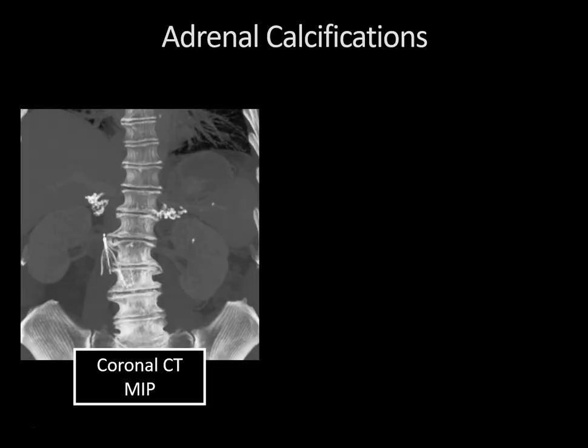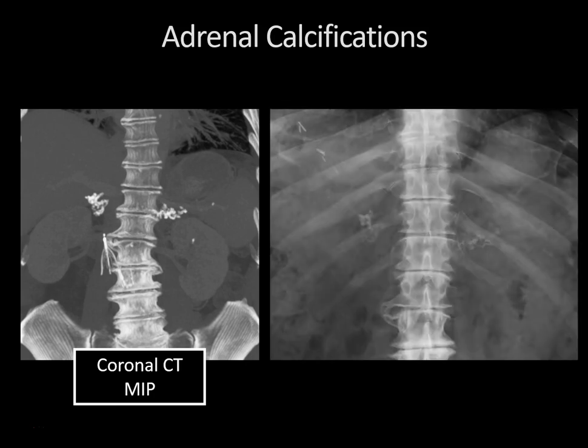The coronal CT maximum intensity projection reformatted images nicely show bilateral amorphous parenchymal calcification involving both adrenal glands. Incidentally, there is also an inferior vena cava filter and a non-obstructing left intrarenal calculus. The abdominal x-ray again shows the amorphous calcification of the adrenal glands.